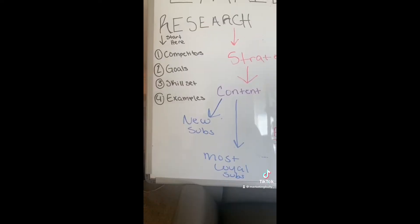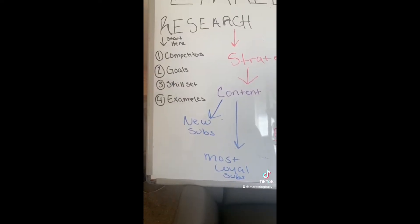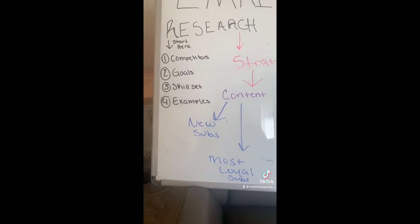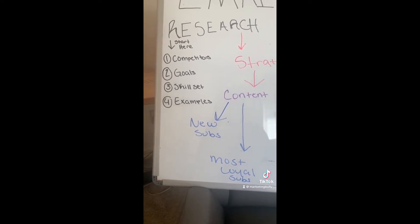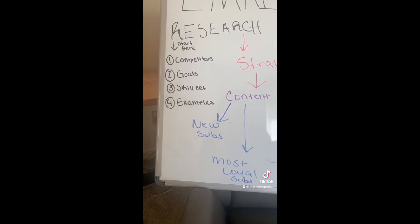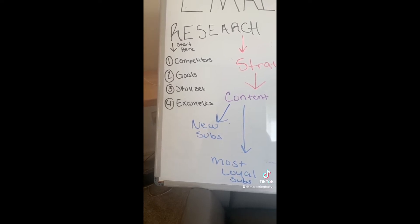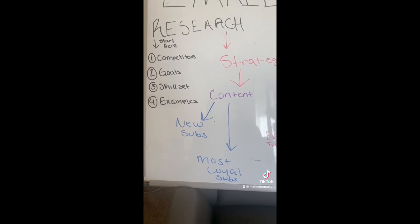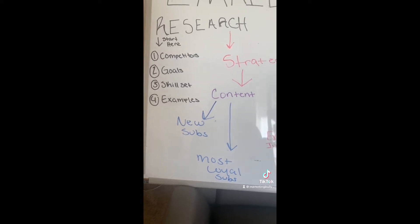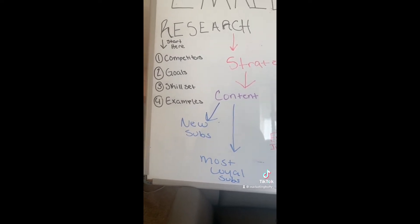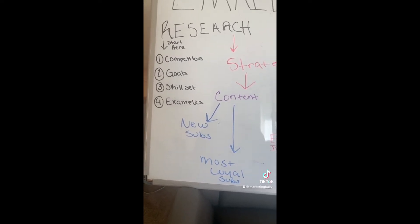When you start with research, you want to make sure that you cover your competitors, goals, and skill set. This means that you need to conduct a competitor analysis. You want to start by trying to find five to ten competitors and breaking down their email strategy. Based on what you find, then you are ready to start setting goals.